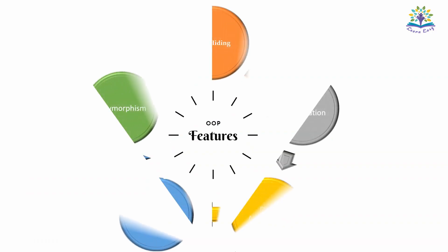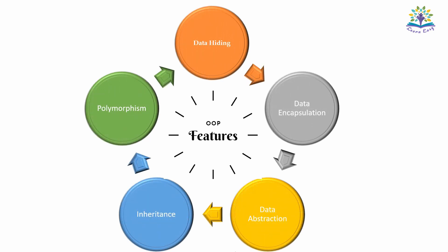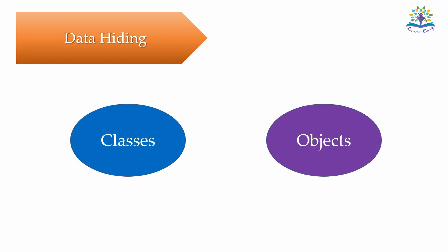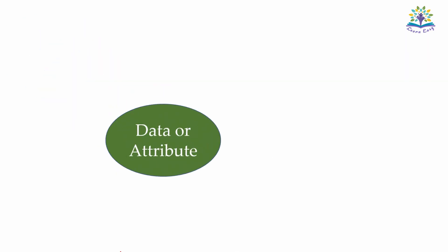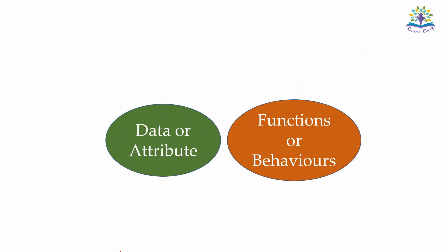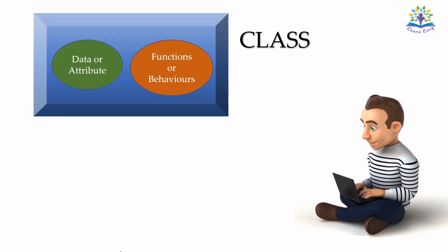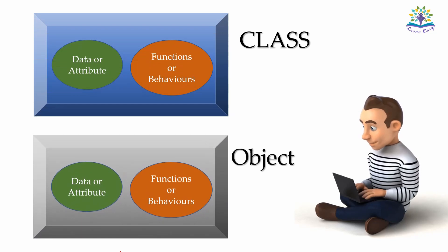Now let's have a look at its features. We will learn the meaning of these features with the help of real-life entities. The first feature we are going to see is data hiding. This is realized with the help of classes and objects. Whatever data or attributes which a programmer will be using, along with the set of instructions that will be using these data for a certain task, are enclosed or bundled securely inside the entity class. Whenever a user wants to access this data or wants to perform a particular task, an instance of the class is created. This is known as an object.